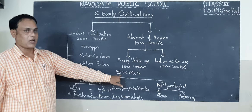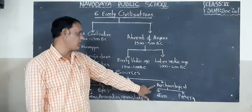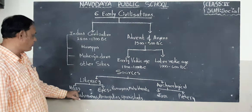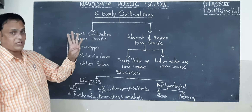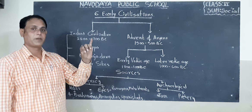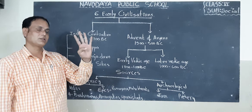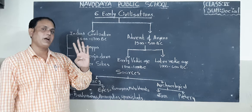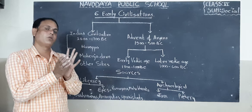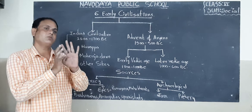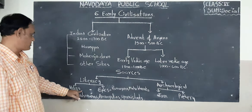What are the sources of the civilization? Here we have literary evidence and archaeological evidence. In the literary sources, we have four Vedas: Rig Veda, Yajur Veda, Samaveda, and Atharva Veda. When we read these Vedas, we can find how the people lived in those days, what customs and traditions they followed, and the nature of the people.